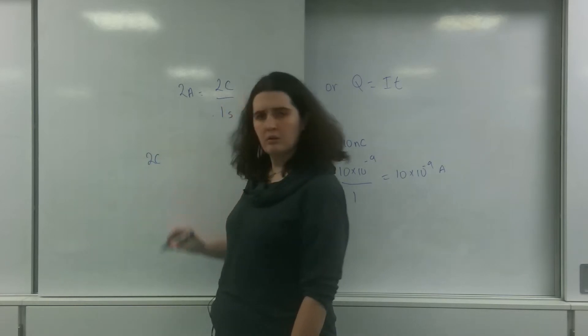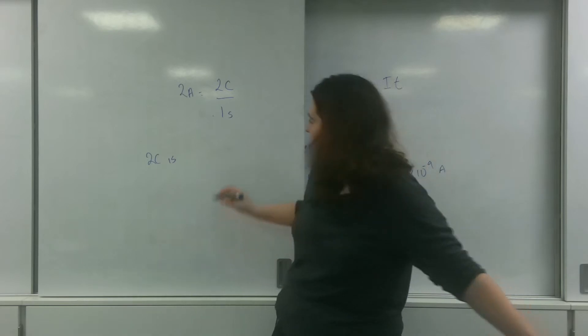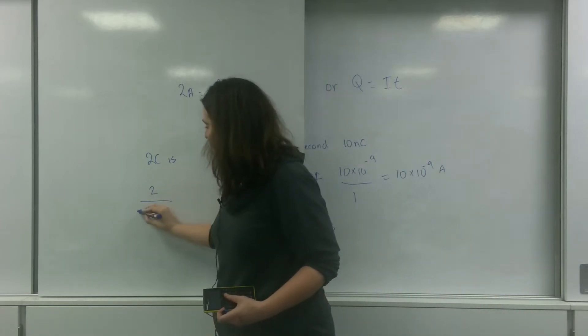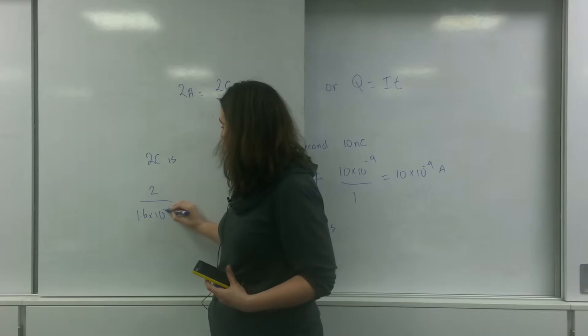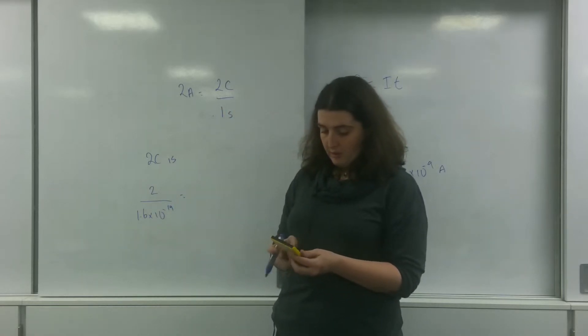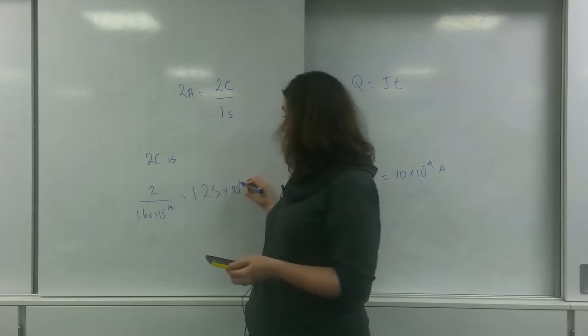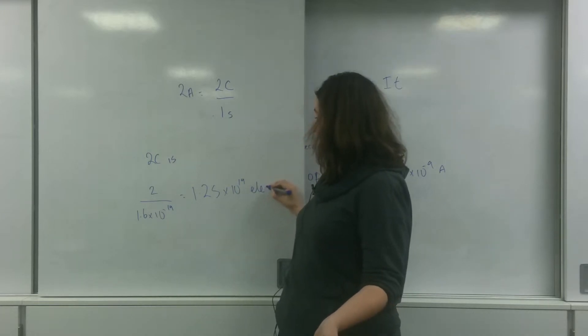2 coulombs is, let's look at how many electrons it is. So 2 divided by 1.6 times 10 to the minus 19 is 1.25 times 10 to the positive 19 electrons.